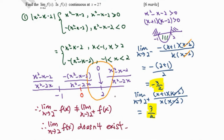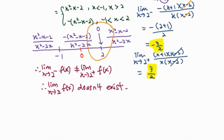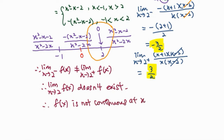We continue to the next part: is the function continuous at x equals 2? Since the limit of the function as x approaches 2 does not exist, the condition for continuity is not fulfilled. Therefore, we conclude that the function is not continuous at x equals 2.